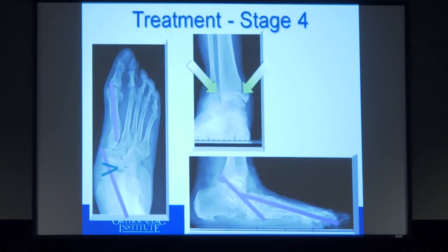Stage four is more involved — a lot of times we have to stage it with two surgeries: one to address the foot and get it lined up, then go back and address the ankle separately. This was a 73-year-old male with persistent flat foot despite bracing. The first surgery realigned the foot, and then we did a total ankle replacement to address the ankle pathology.